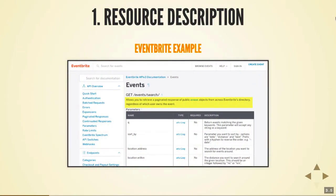An audience member asks if resource descriptions are really useful, since developers can see the available actions, and whether something more descriptive about what an event is would be more helpful. The instructor responds: there's probably a lot more to say about events, and that detail is typically done in the conceptual topics of the guide. If you put too much information in the reference description, it becomes less scannable. That's why there's a whole separate section for conceptual or non-reference information.